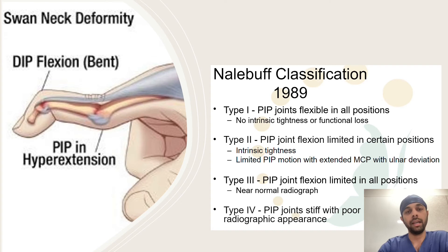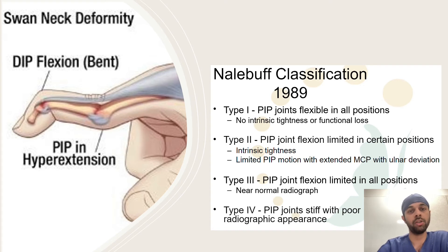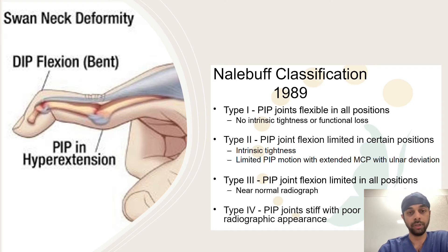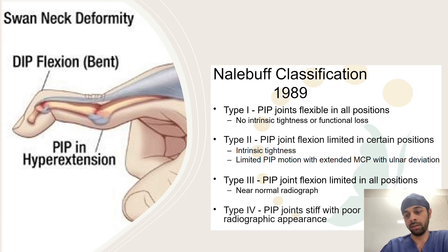Swan neck deformity is beautifully classified by the Nalebuff classification of 1989 into Types 1, 2, 3, and 4, concentrated on the PIP joint. Type 1: the PIP joint is still flexible with no intrinsic muscle tightness or loss of function. Type 2: PIP joint flexion is limited in certain positions, with intrinsic tightness and limited motion with extended MCP and ulnar deviation. Type 3: limited flexion in all positions, though x-rays look normal. Type 4: the PIP joint is stiff with radiographic evidence of poor joint and cartilage damage — the joint is deformed.